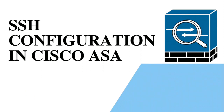Hello everybody, welcome to Network Tech Zone. In our previous video we configured Telnet in Cisco ASA Firewall — you can find the link in the description box below. Today let's configure SSH and verify the connectivity by changing their security levels.